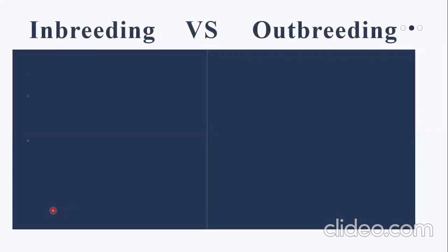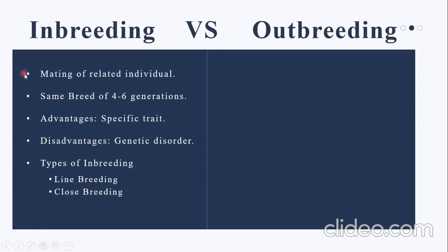Inbreeding is defined as the breeding between animals of the same breed for four to six generations. The advantage of inbreeding is that we can develop a pure line by increasing homozygosity. The disadvantage is that it creates genetic disorders and poor health. The types of inbreeding are line breeding, defined as mating within a specific breed where a certain number of genetic lines are available, and close breeding, defined as the most intensive form where animals are very closely related and can be traced back to more than one common ancestor.